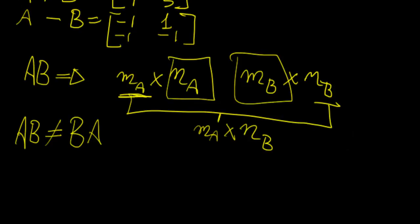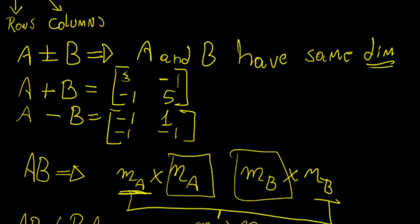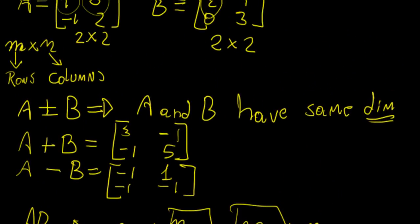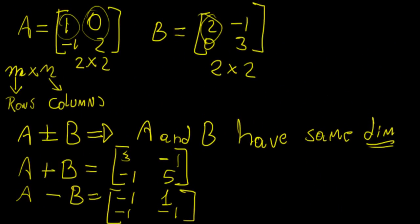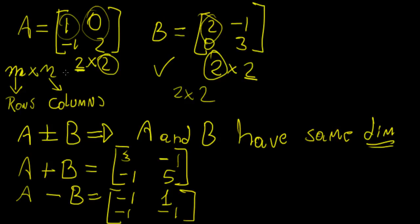Now let's see if we can multiply these two matrices A and B together. We have two columns in A and two rows in B, so yes, we can multiply them. The resultant matrix is going to have dimensions two by two — two rows from A and two columns from B.